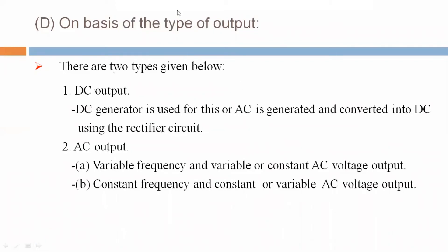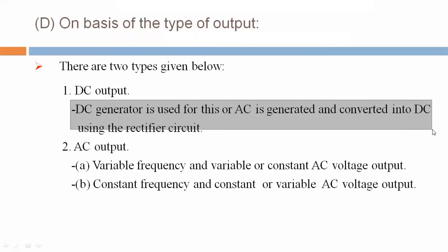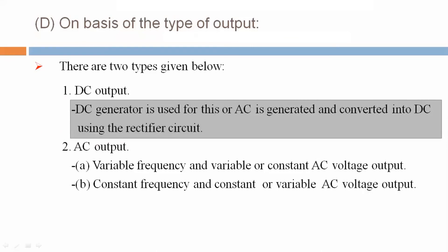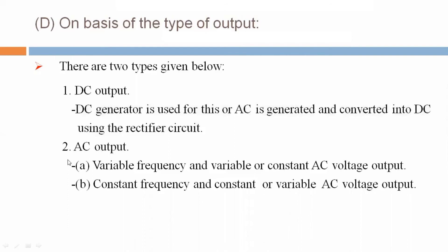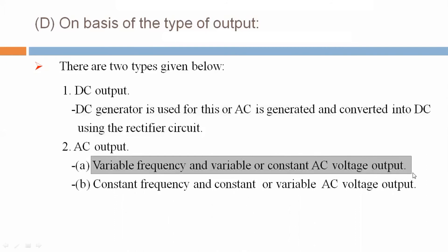D: On the basis of types of output, there are two types. In DC output, a DC generator is used, or AC is generated and converted into DC using a rectifier circuit. In AC output, there are two types: variable frequency, and variable or constant AC voltage output.